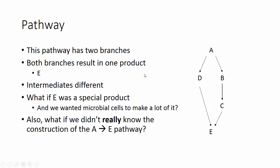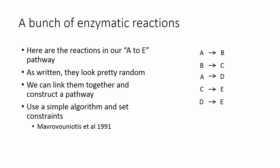What if E was a special product and we wanted microbial cells to make a lot of it? Also, what if we really didn't know the construction of the A to E pathway? What if we didn't have this little map here? In fact, we wanted to make a map that looked kind of like this so we could know the pathways to get from A to E.